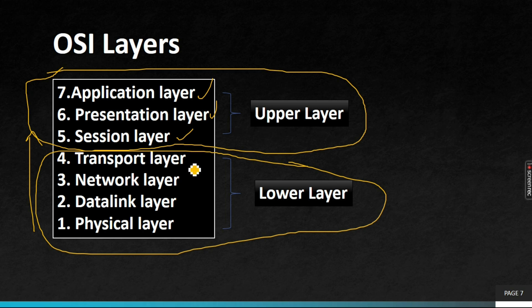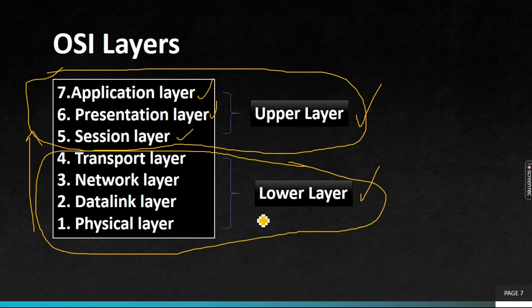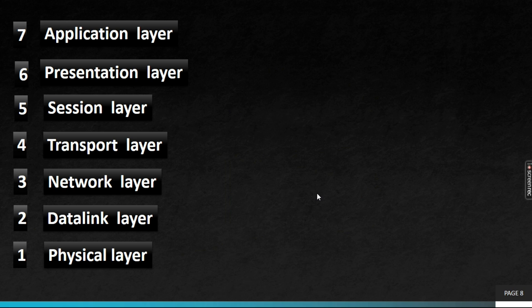The upper layer is close to the user — the user interacts directly with it. The lower layers are physical layer, data link layer, network layer, and transport layer. The lower layers are used for networking purposes. If you are a network engineer, you mostly work in the lower layers. If you are a programmer, developer, or doing ethical hacking, you work in the upper layers.